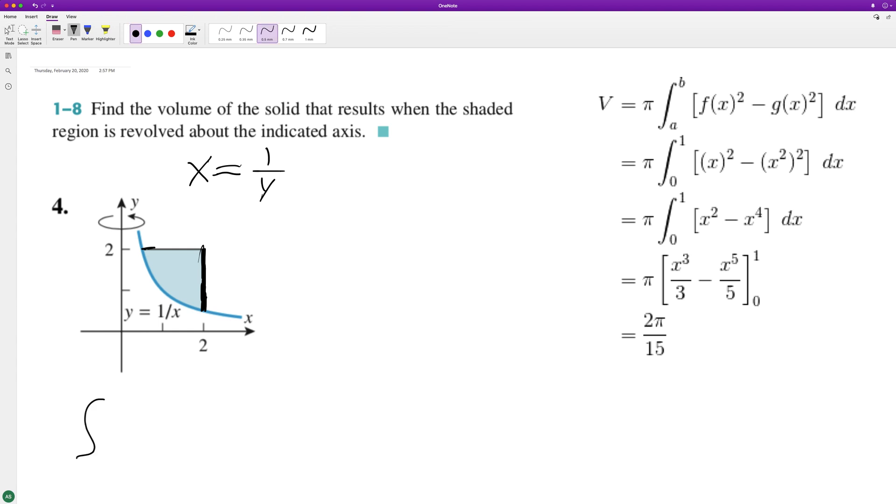So we'll have - this is essentially going to be pi, because it's basically pi r squared. We have two equations, so we have our x equals two and then we square that, minus our one over y squared.